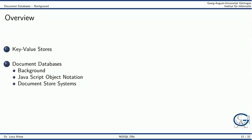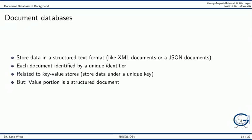We move on to the topic of document databases. Document databases store data in a structured text format. That can be XML, but more popular is the JSON format, which we will see shortly. Each document is identified by a unique ID. In this sense, document databases are related to key value stores. But in contrast to key value stores, the value portion in document databases is now a structured document.